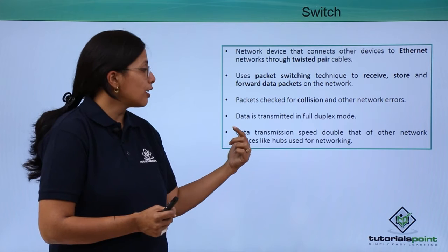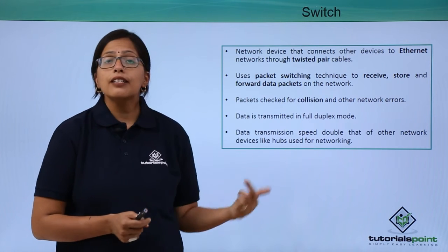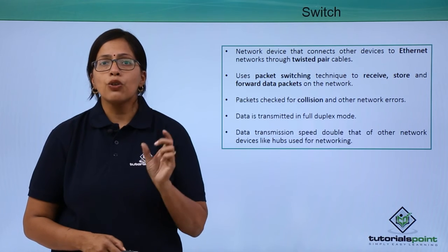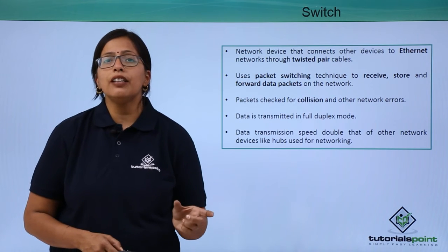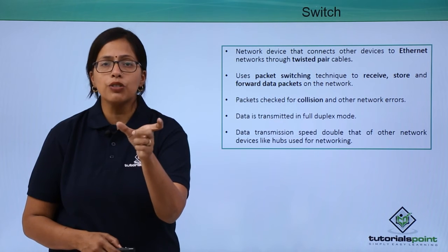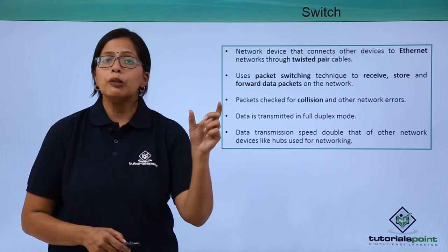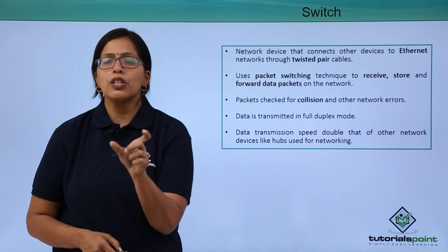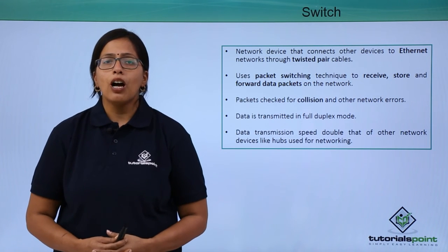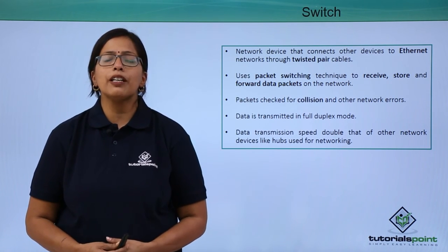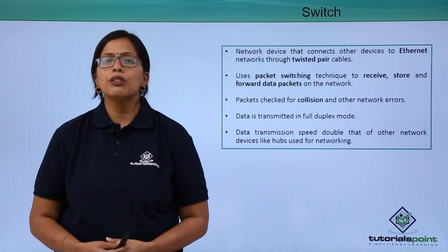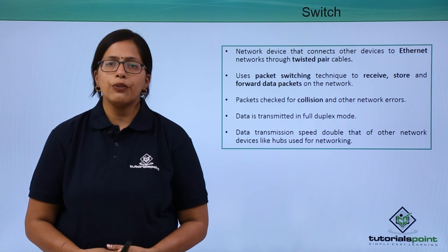What this does is that the data transmission speed is double that of other network devices. So if the speed is say S when a router or hub is being used, then the speed will be 2S if the switch is being used. In this video, we have learned how a switch functions and how it is better than a router or a hub. In our next video, we are going to understand how a gateway works.